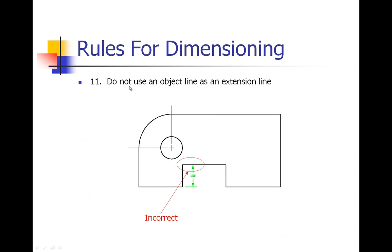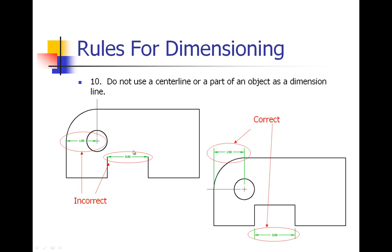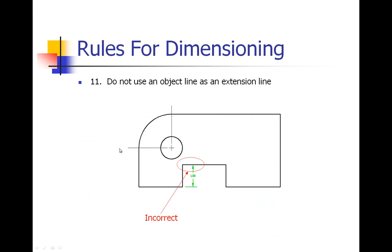Number eleven: do not use an object line as an extension line. Now I'm going to jump back to number ten. This one was talking about using object lines as dimension lines. Now if you recall, a dimension line is the line with the arrow head. Number eleven we're talking about not using the object line as an extension line. The extension lines were the little lines extending out beyond our object. So we have here this arrow head is pointing to an object line rather than an extension line. We would want to pull that dimension probably off to the left of our drawing and have this outside of the part and have an extension line on each side.